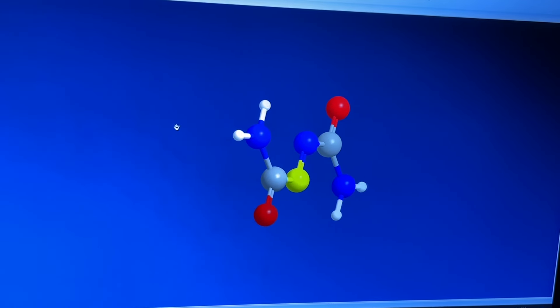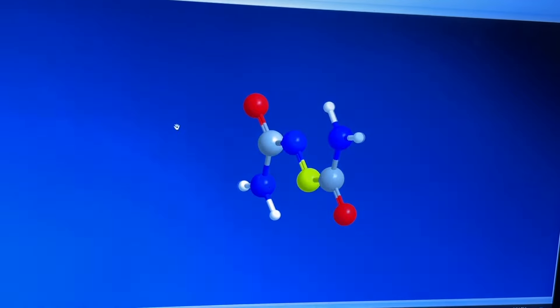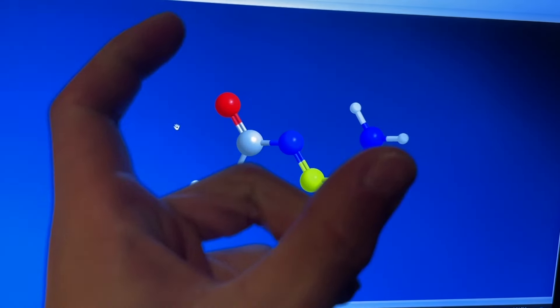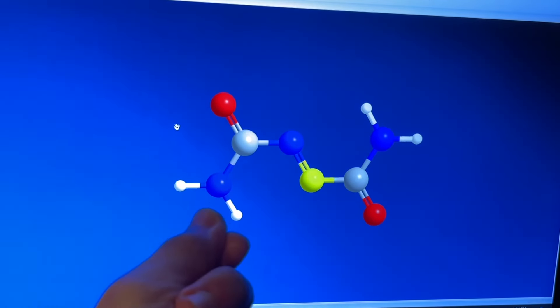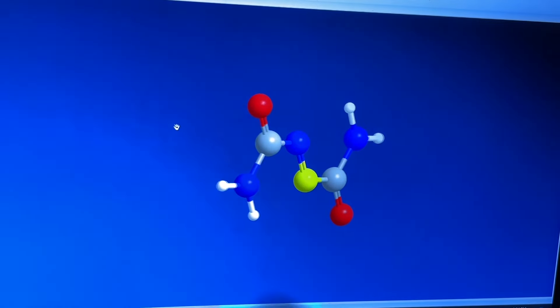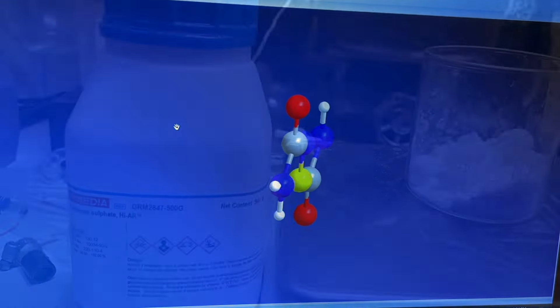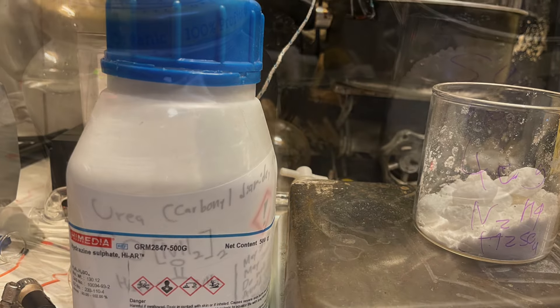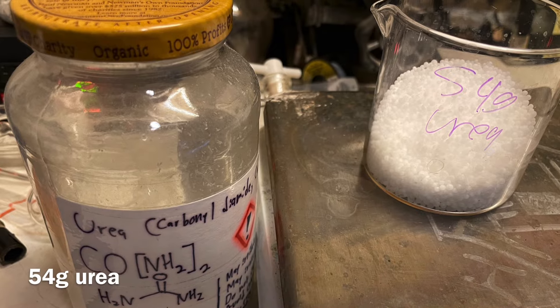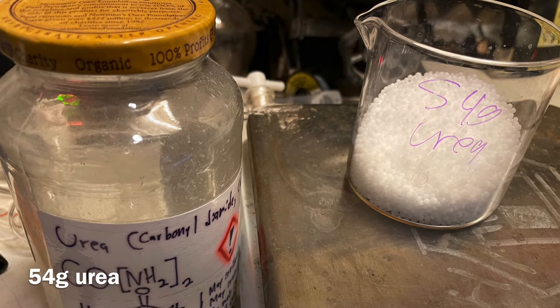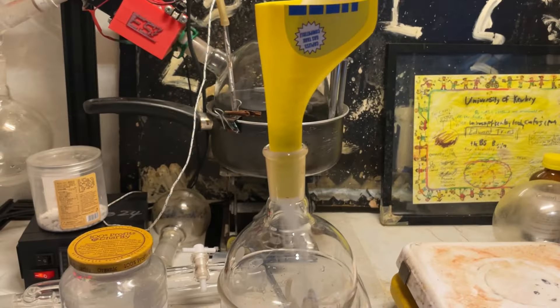Let's go to a video and actually start running the reactions. So, step one, biurea synthesis. Condensing two urea molecules into one biurea with the help of hydrazine to form that nitrogen bond. So, this is scaled up from paper. I'll put the paper down in the description. Here are the amounts of reagents I use for this first step, which is making biurea.